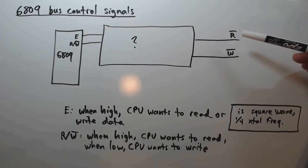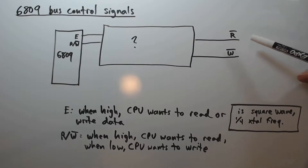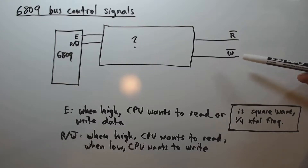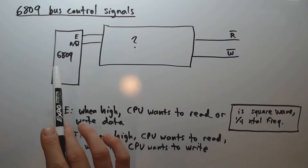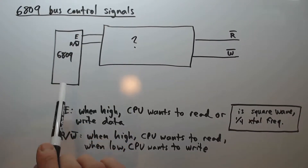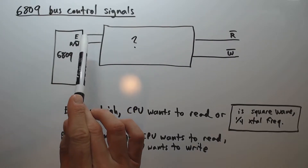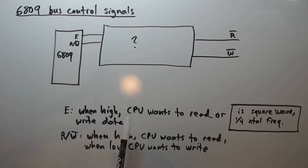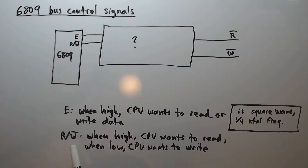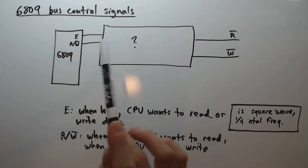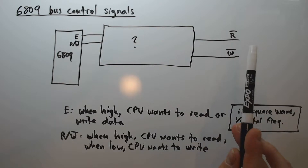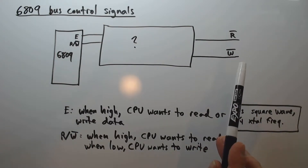In an ideal world, our CPU would directly generate these read and write signals. However, our 6809 CPU makes things more complicated. It has two important bus control signals: the E signal and the RW signal. The E signal goes high when the CPU wants to either read or write to a peripheral device. The RW signal dictates the direction: when RW is high, the CPU wants to read; when RW is low, it wants to write. Our glue logic must decode E and RW to generate the R and W signals our devices expect.